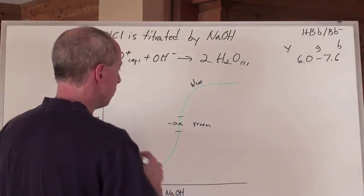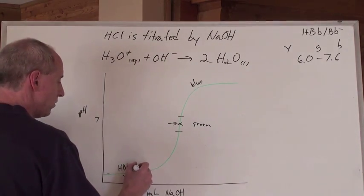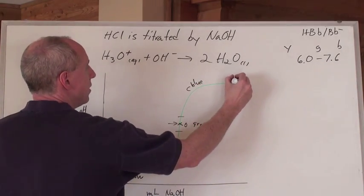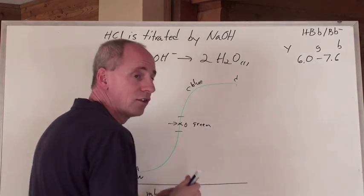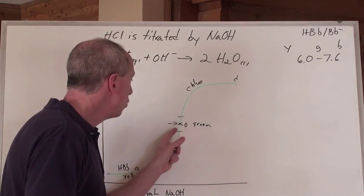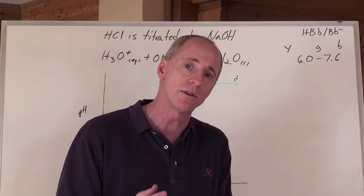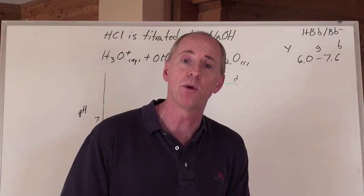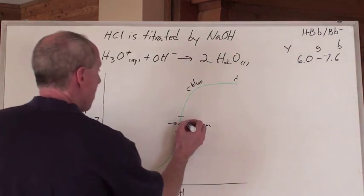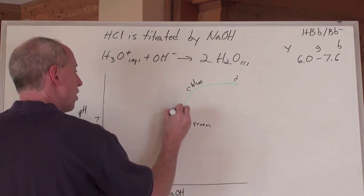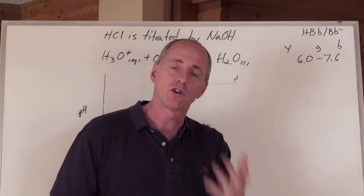On a multiple choice test, many students see options for where the end point is and will say it's at D — at the very end of the curve — because 'that's the end, so it's the end point.' That's incorrect. The end point is where you want the color to change, and that's at the equivalence point. The end point and equivalence point are not totally synonymous, but they're close — you want the end point to coincide with where the equivalence point is supposed to be.